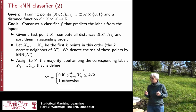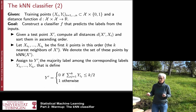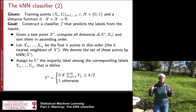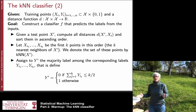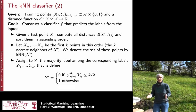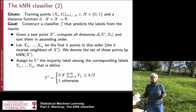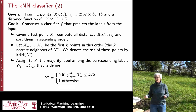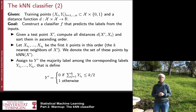The predicted label y' is given by the majority vote formula: we sum the labels of the k points in the k-nearest neighborhood. Since labels are either 0 or 1, we check whether the sum is smaller than k/2 or larger than k/2. If smaller, the majority predicted 0, so we output 0. If larger, the majority predicted 1, so we output 1. This is how the k-nearest neighbor classifier works — a very simple algorithm.